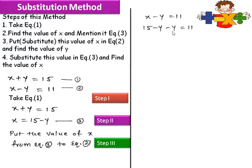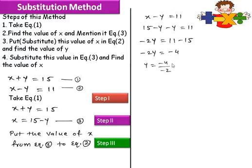Here we have minus y and minus y, which gives minus 2y. This 15 will shift to the other side and become negative 15. So we have minus 2y equals 11 minus 15, which is minus 4. Therefore y is equal to minus 4 upon minus 2, so y is equal to 2. Step 3 is complete and we have found y equals 2.